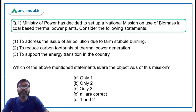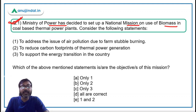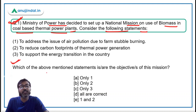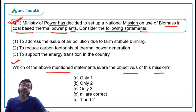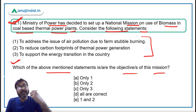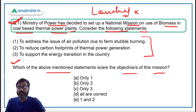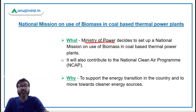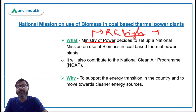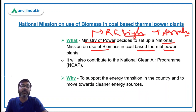Let's move to the first question: The Ministry of Power has decided to set up a National Mission on Use of Biomass in Coal-based Thermal Power Plants. You have to consider the following statements regarding this mission and identify which are its objectives. Remember, this mission has been decided but not yet launched, so detailed guidelines are not yet available. The Ministry of Power is headed by Mr. R.K. Singh, whose Lok Sabha constituency is Ara in Bihar.